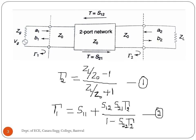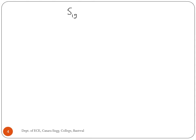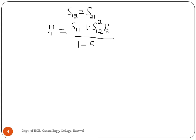Therefore, for a mismatched load, the input reflection coefficient is not equal to S11. For a reciprocal network, S12 equals S21, so that the reflection coefficient at port 1 is S11 plus S12 squared times the reflection coefficient at port 2, divided by 1 minus S22 multiplied by the reflection coefficient at port 2.